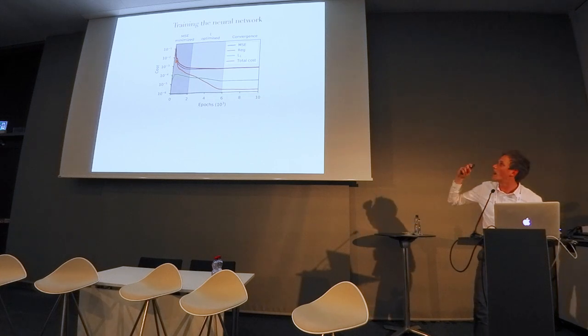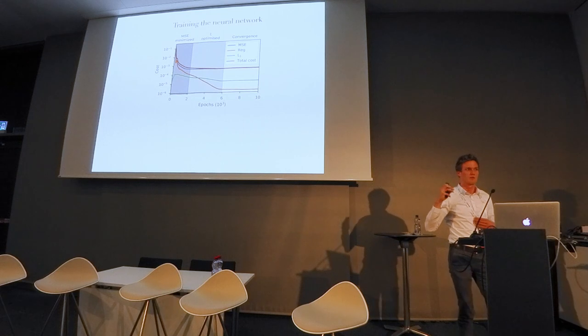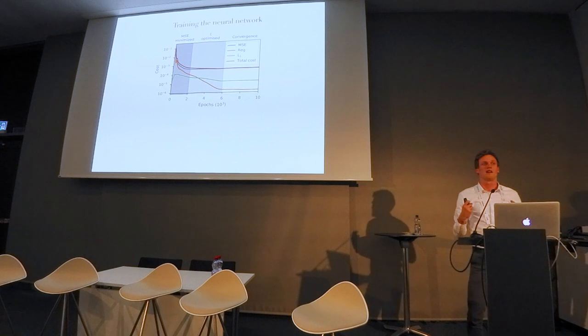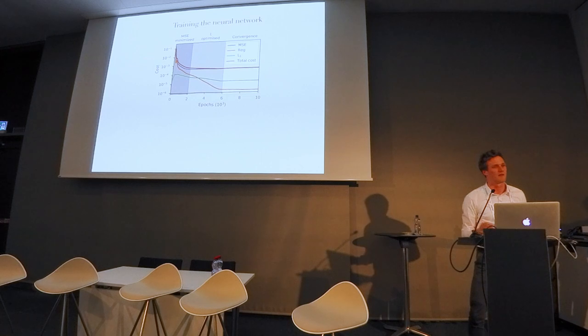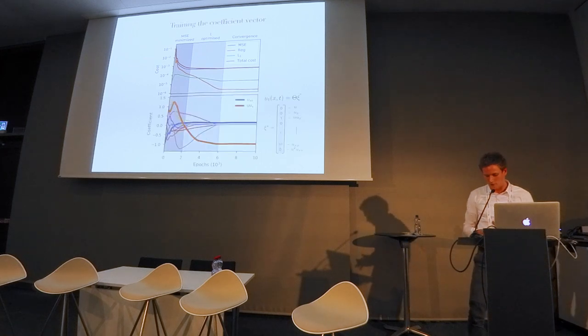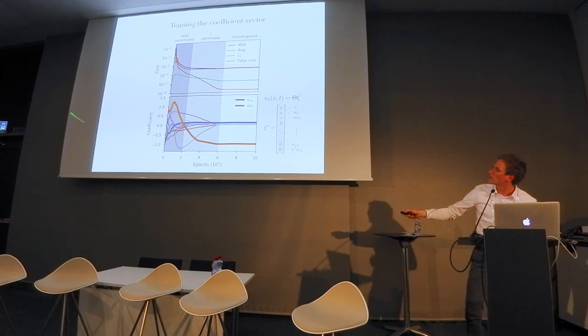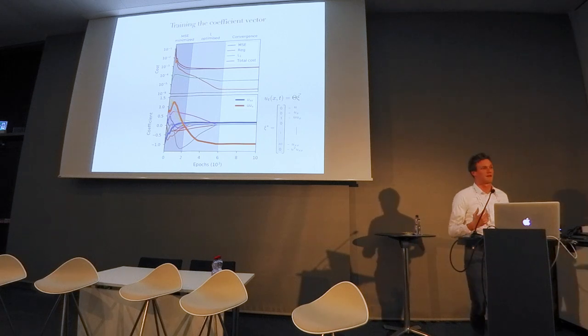Because optimizing the regression term, which is trying to find the underlying PDE, can only be done once the mean square error is relatively low, when your neural network has some sense of data. If you look at the different coefficient xi as function of number of epochs, you see that as long as the mean square error is not converged, all these coefficients go all over the place. At some point they start to be learned, and at the end, this is the Burgers equation, you get two non-zero terms that remain.